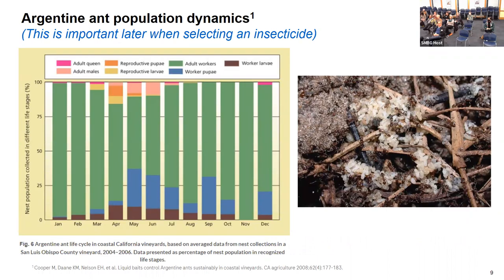On the left is a diagram from a UC website showing the life cycle of an Argentine ant colony in a coastal California vineyard — probably very close to us. It shows relative populations of males, reproductive pupa, reproductive larvae, adult workers, worker pupae, and worker larvae. In January and February where we are now, it's all adult workers and a queen. But as we move into March, April, May, June — spring and summer months — the number of pupae in the colony dramatically increases as a proportion of the total population.